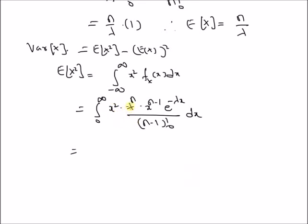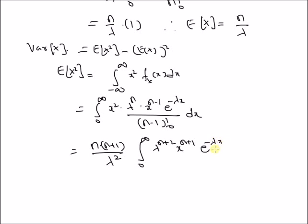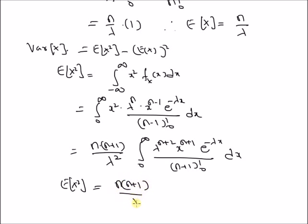By rearranging and multiplying and dividing by n(n+1)/λ², we obtain the integral from 0 to infinity of λⁿ⁺² · xⁿ⁺¹ · e^(−λx) / (n+1)! dx, which again looks like an Erlang pdf. Therefore the second moment E[X²] = n(n+1) / λ².